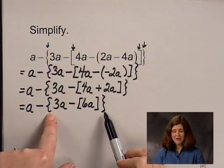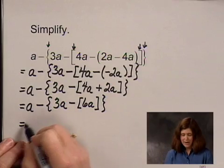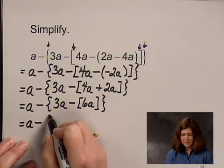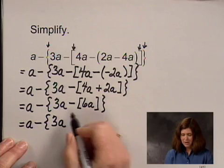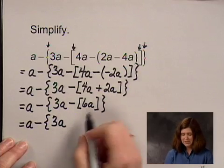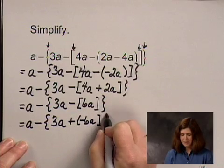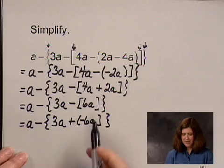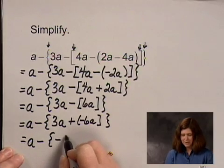Now, I'm going to simplify again inside the braces, which are my remaining set of grouping symbols. I have A minus 3A plus the opposite of 6A. 3A plus the opposite of 6A, I can write as negative 3A.